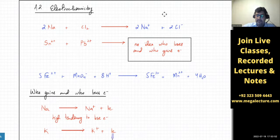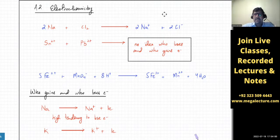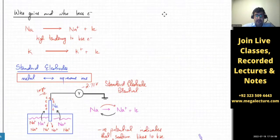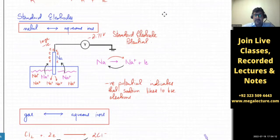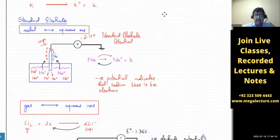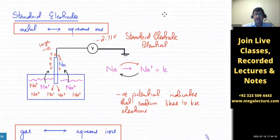In that case, you need a quantitative value which can tell you what that substance likes to do and how much it wants to do that. For example, sodium wants to lose electrons — but exactly how much does it want to? Does it want to lose electrons more or less than potassium? You need a value for that. So we looked at electrodes, which give you potential values — voltages — that tell you what a substance likes to do.